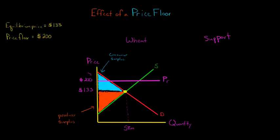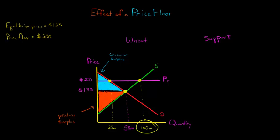When the government does this, what are the effects? At a price of $200, how much wheat is going to be demanded and how much is going to be supplied? The amount supplied is higher than the amount demanded. Let's say farmers are willing to supply 100 million tons, but demand is only 25 million tons. Farmers say that's a great price, but consumers say that's higher than they expected to pay, so they only demand 25 million tons.